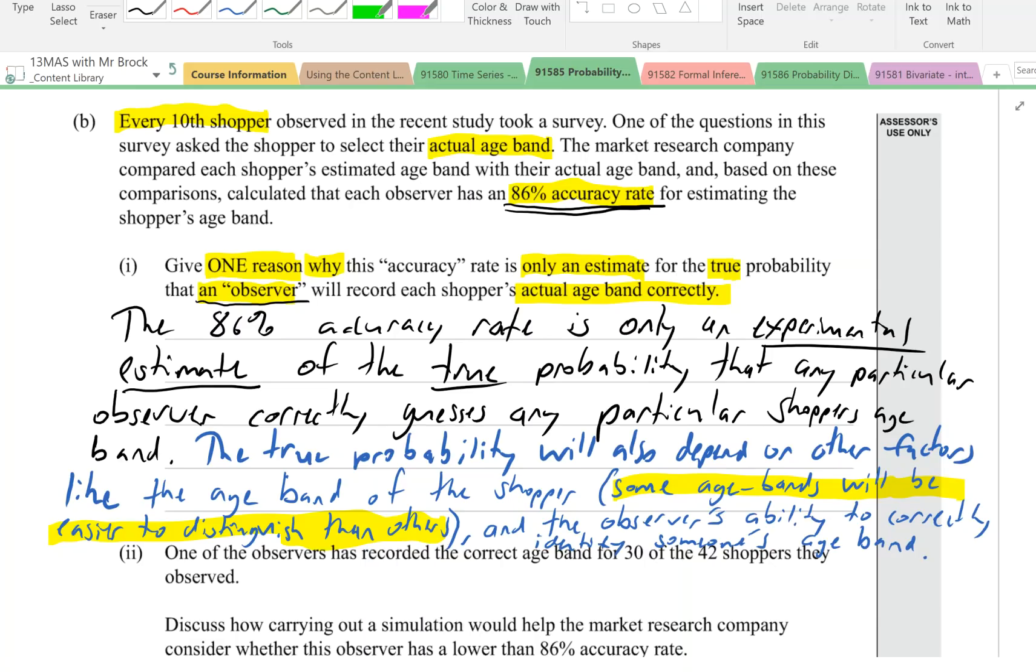It says give one reason. We could have given more. We could have talked about the fact that this is only a sample, and we're not sure. It's only a sample of observers. We don't even know how many observers there were. And we don't know how big the sample of shoppers was either. And the age distribution of those shoppers may not represent the population of all shoppers. There's a lot of stuff we're not being told. But we only had to give one reason. So in the interest of time, that'll do.